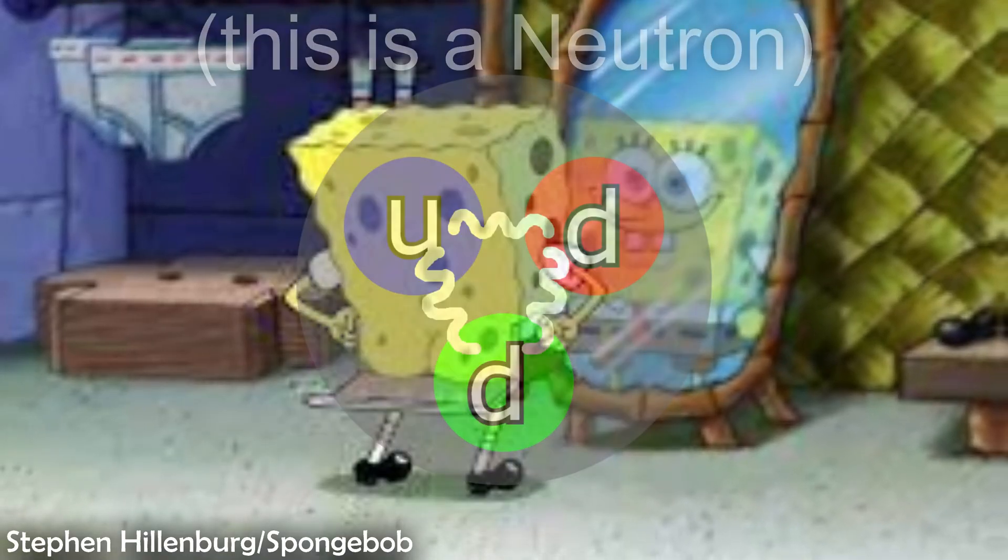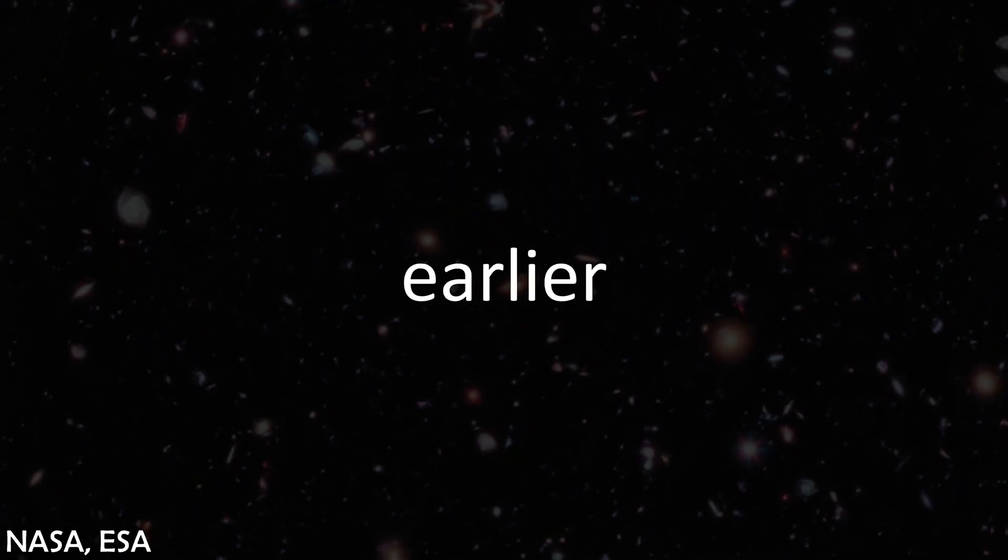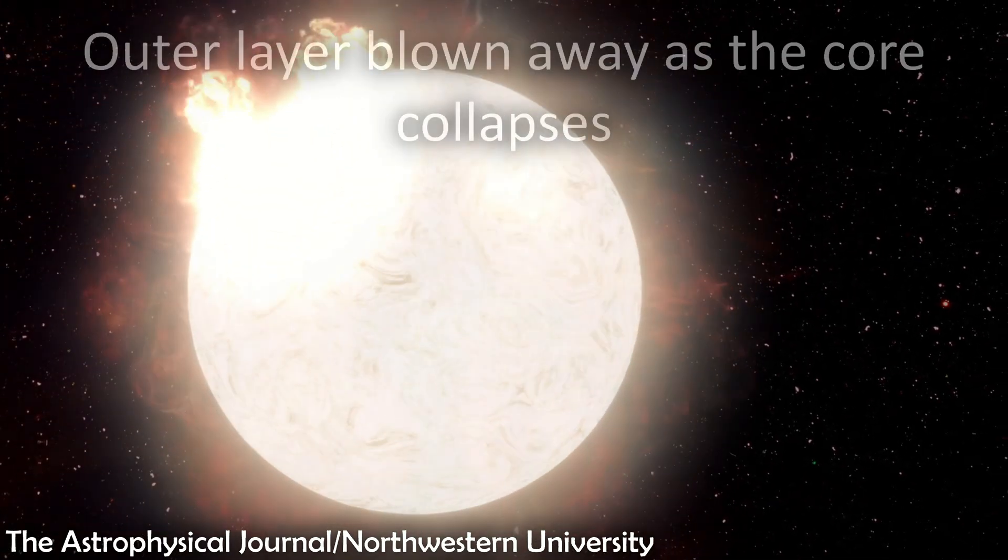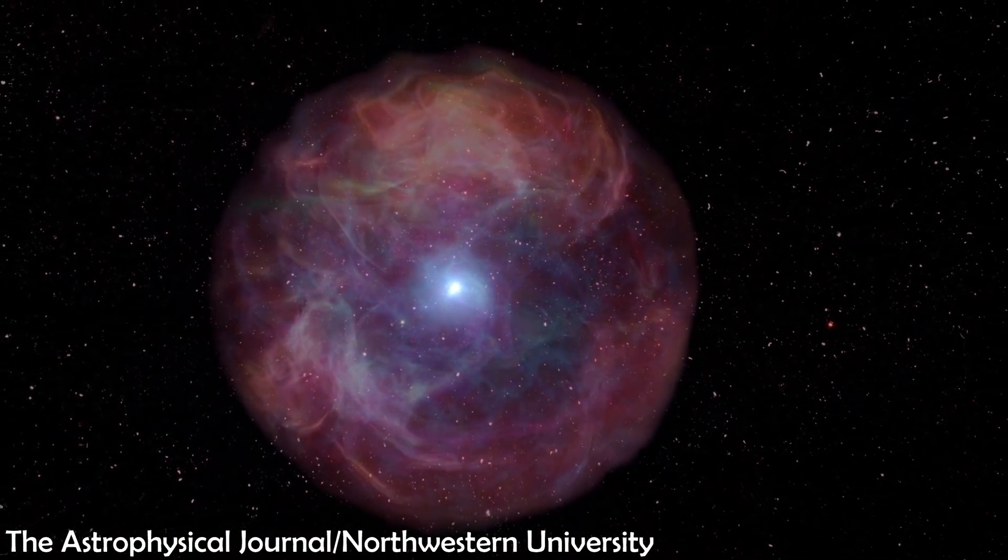But why is it called a Neutron Star? I'll pass the mic to my boy. As said earlier, the core collapses. Why does it collapse? Well, that's because of gravity.